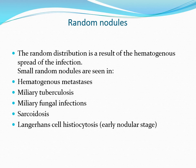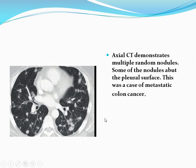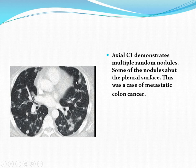Randomly distributed nodules are a result of hematogenous seeding of infection. Small random nodules are seen in hematogenous metastasis, miliary tuberculosis, miliary fungal infection, sarcoidosis, and Langerhans cell histiocytosis. There are multiple small nodules distributed randomly throughout the lung. Axial CT demonstrates multiple random nodules; some of the nodules reach or abut the pleural surface. This case was metastatic colonic carcinoma.